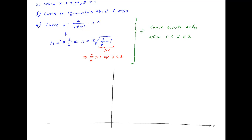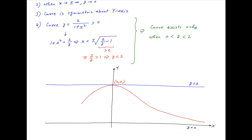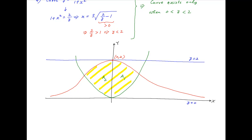We now plot this curve on the Cartesian plane. When x = 0, y = 2, and as x tends to infinity, y tends to 0; the curve is symmetric about the y-axis as noted. The other curve given in the problem is y = x², which is a standard upward-facing parabola with vertex at the origin. The required area bounded by the two curves is as shown. The shaded area in the first quadrant is A1 and in the second quadrant is A2, so the total required area A = A1 + A2.